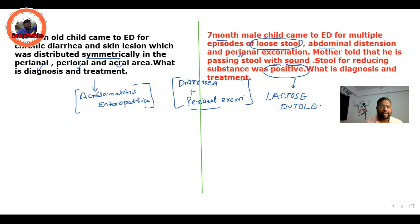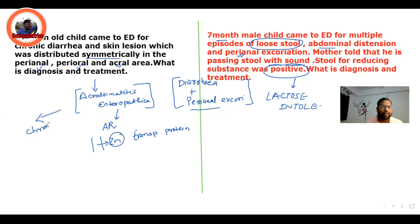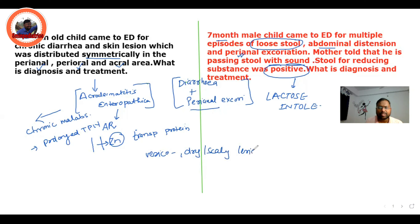Let's discuss acrodermatitis enteropathica. It is an autosomal recessive condition in which there is defective absorption of zinc due to a mutation in the zinc transporter protein. It usually occurs in a child with chronic diarrhea, chronic malabsorption syndrome, or a child on prolonged TPN.